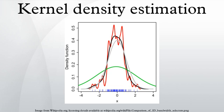In statistics, kernel density estimation is a nonparametric way to estimate the probability density function of a random variable. Kernel density estimation is a fundamental data smoothing problem where inferences about the population are made based on a finite data sample.